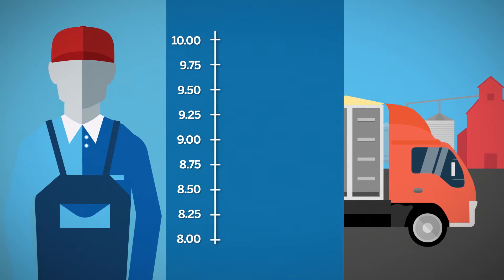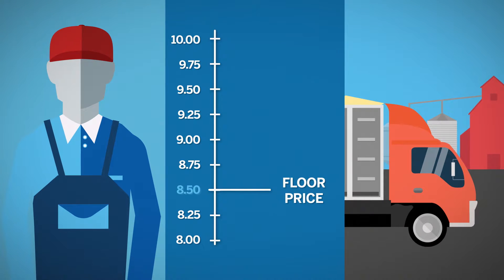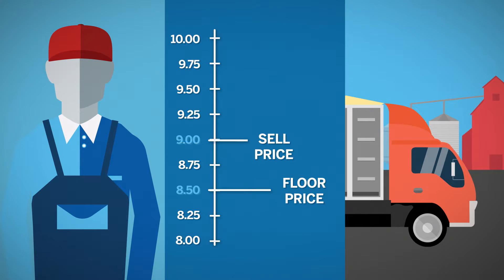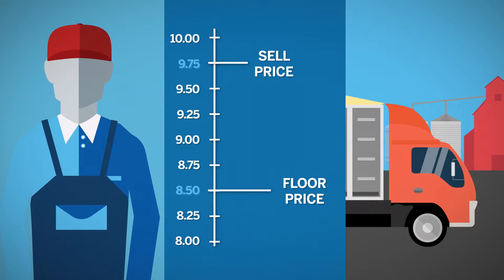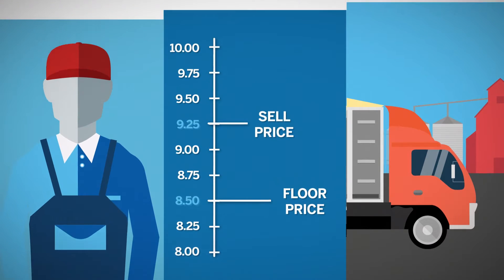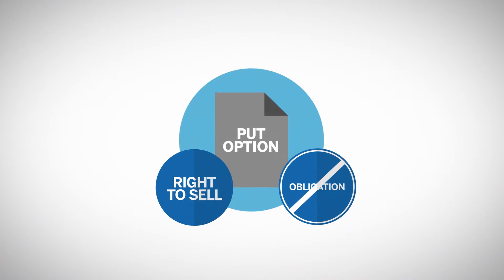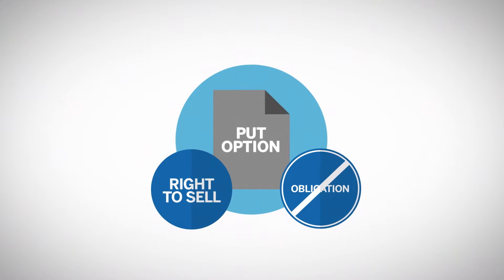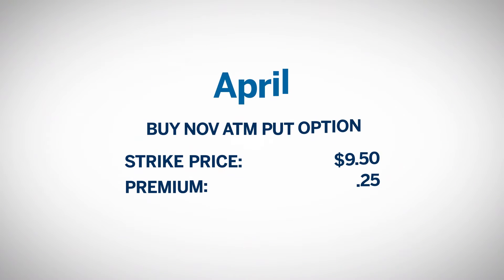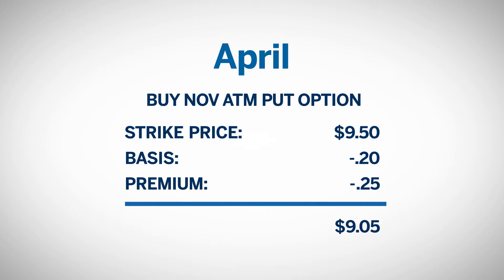However, the producer decides to buy put options to establish a floor selling price and retain the opportunity to potentially sell his soybeans at a higher price. By purchasing the put option, he has the right, but not the obligation, to sell futures at the strike price of the option. In April, a November at-the-money put option with a strike price of $9.50 costs $0.25. With this put option, he will establish a floor price of $9.05, which equals the put option strike price of $9.50 minus the expected $0.20 under basis, minus the $0.25 premium he paid for the option.